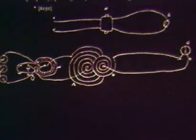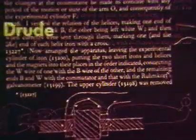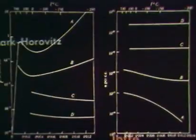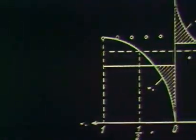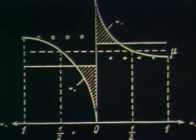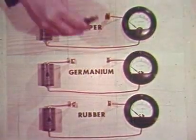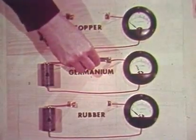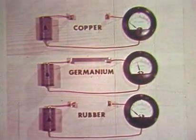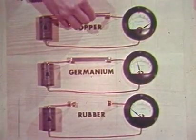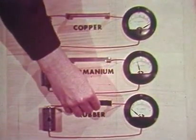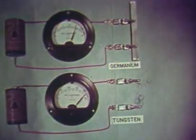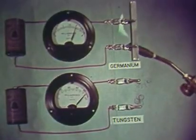The discovery of the transistor is the result of scientific research — research by men of insight who sought to understand the atomic structure and electrical behavior of semiconductors, which had intrigued them for years. For example, the electrical conductivity of semiconductors like germanium lies somewhere between that of good conductors like copper and good insulators like rubber. Conductivity of semiconductors increases when their temperature is raised.